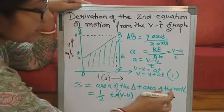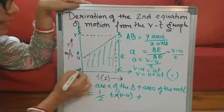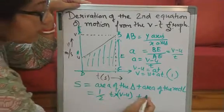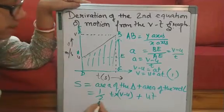Now, see, this is the height of the triangle. So I have to take v minus u. Plus, area of the rectangle is length into breadth. So here it is t into u. Or I will just write ut.